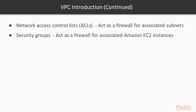Two other key concepts are Network Access Control Lists, or ACLs, which act as a firewall for associated subnets controlling both inbound and outbound traffic at the subnet level, and security groups, which act as a firewall for associated Amazon EC2 instances controlling both inbound and outbound traffic at the instance level.